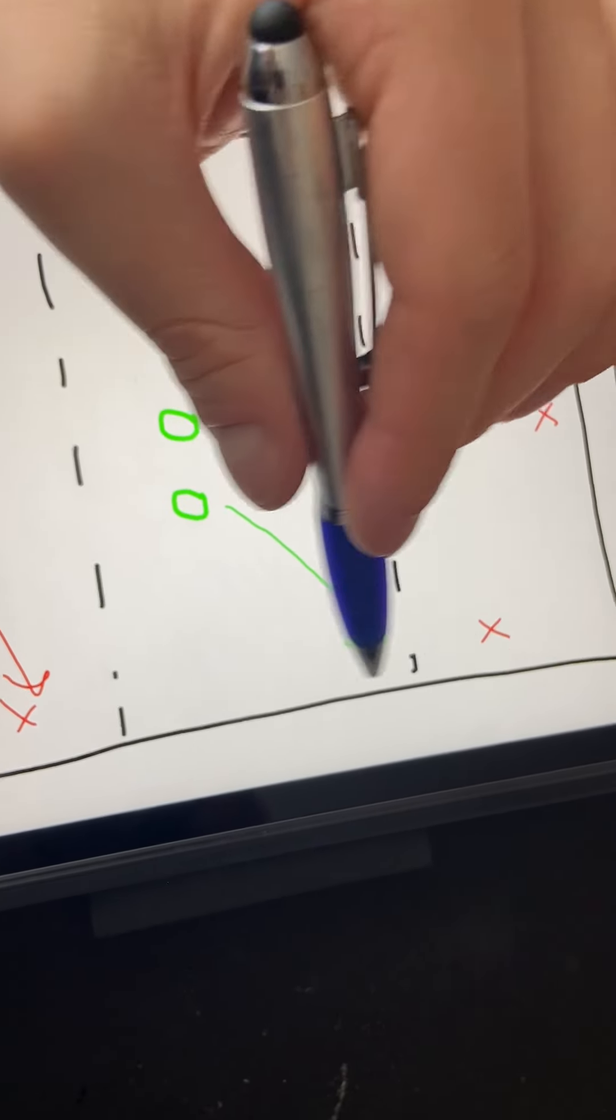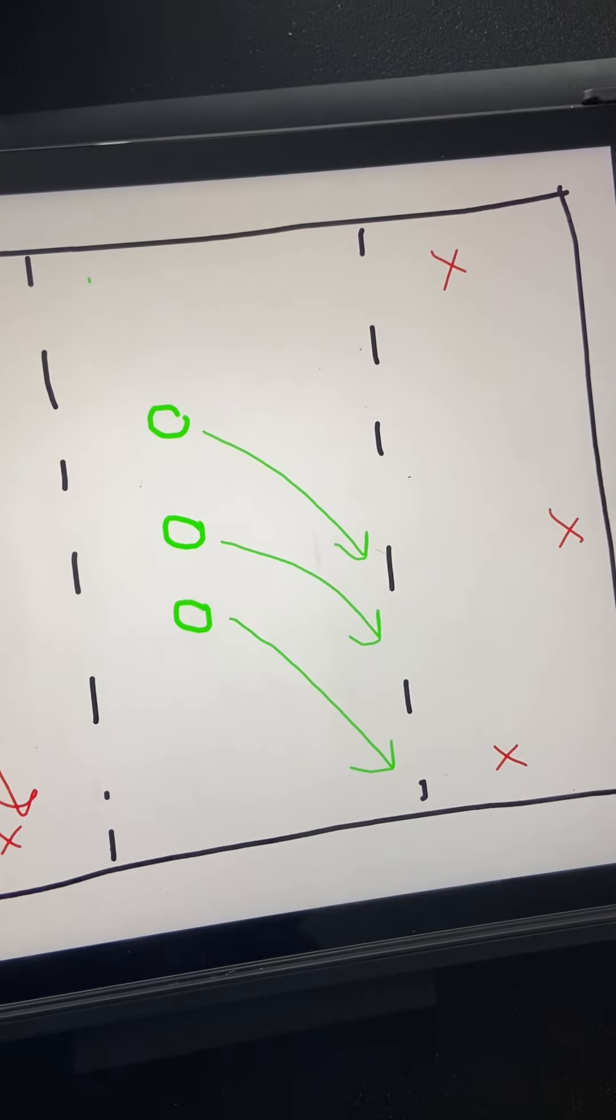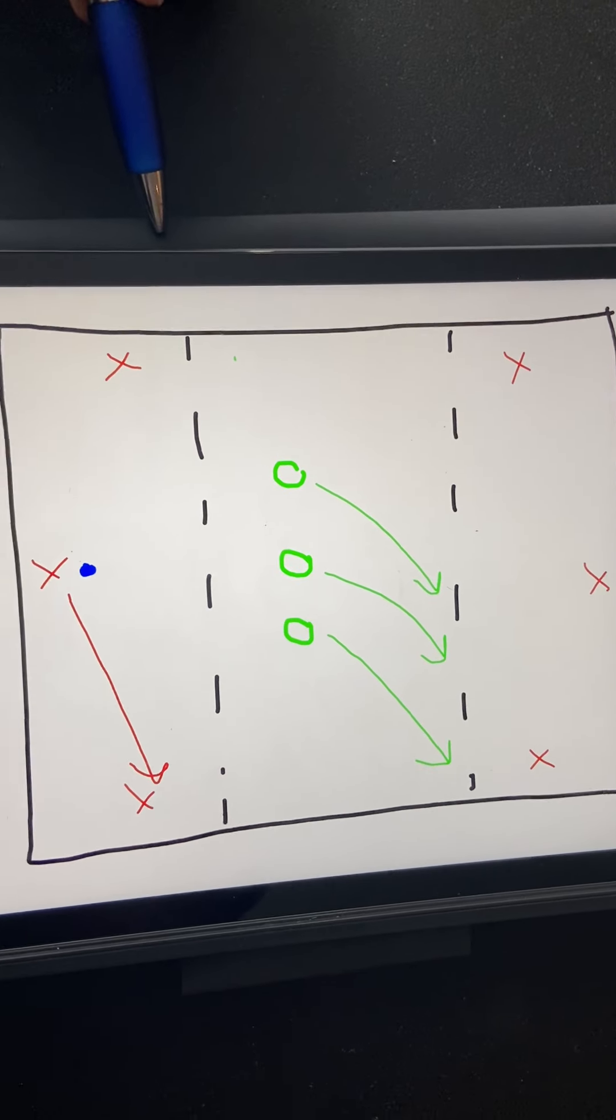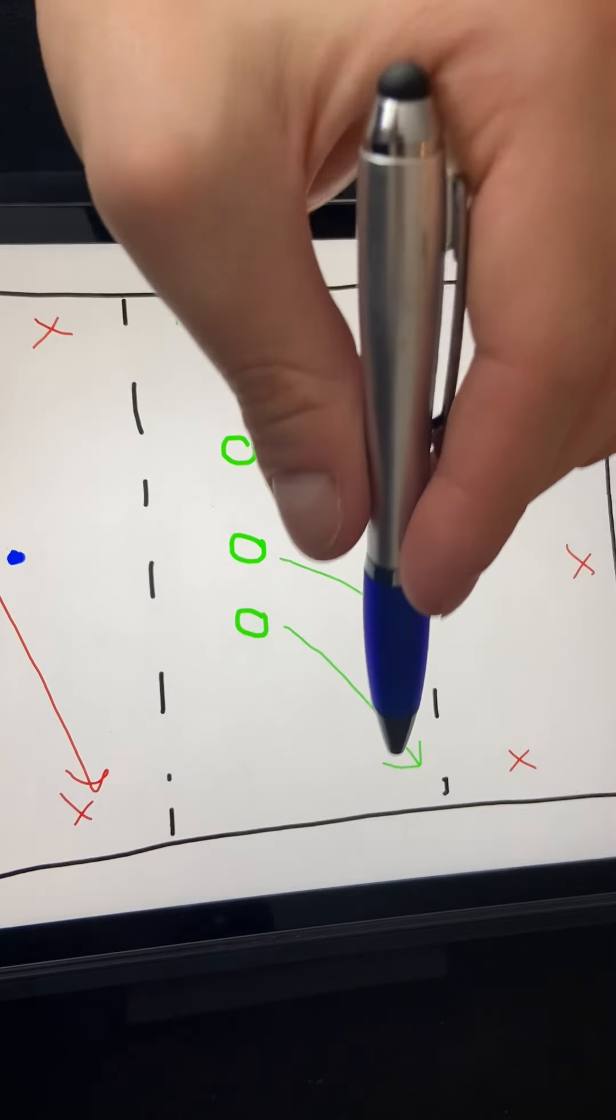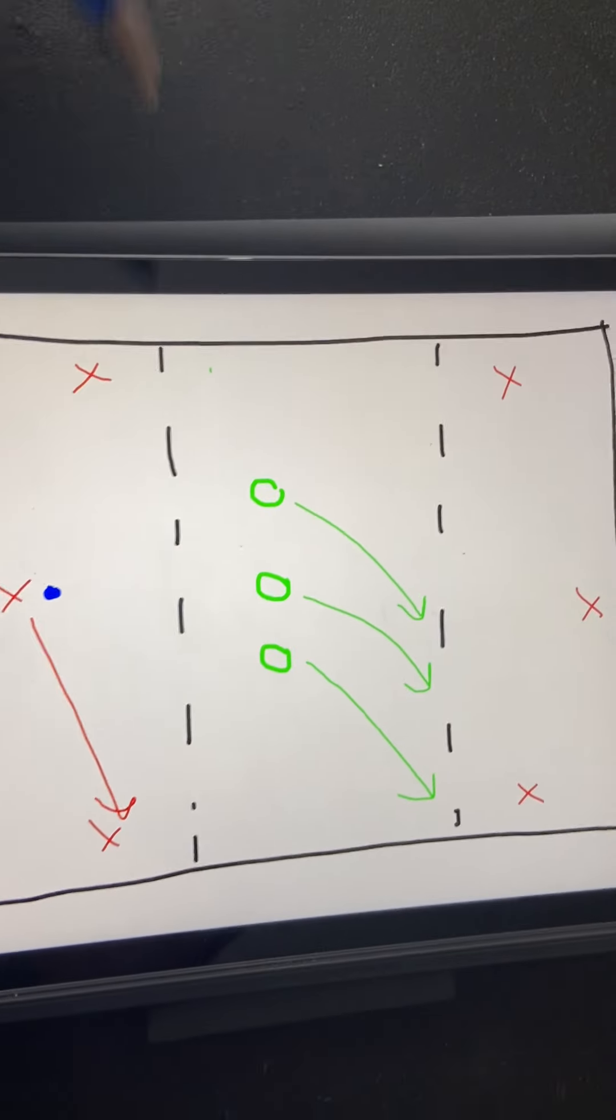So the pass is taken away. So this is the demonstration of why we want to drop and then shift when there's big switches of play along the back.